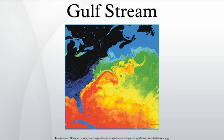A river of seawater called the Atlantic North Equatorial Current flows westward off the coast of northern Africa. When this current interacts with the northeastern coast of South America, the current forks into two branches. One passes into the Caribbean Sea, while a second, the Antilles Current, flows north and east of the West Indies. These two branches rejoin north of the Straits of Florida, as shown on the accompanying map.